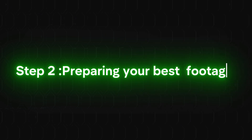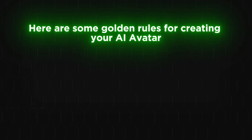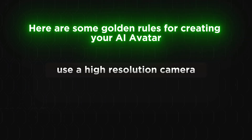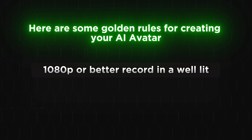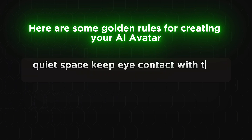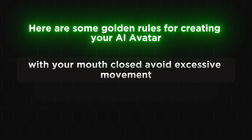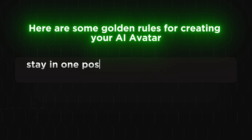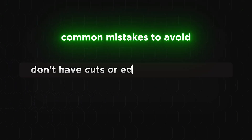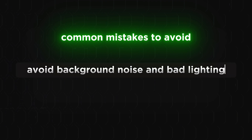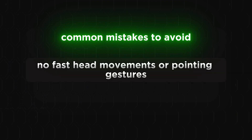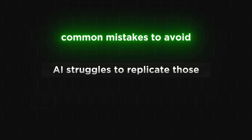Step 2: Preparing your best footage. Before you upload, let's set you up for the best results. Here are some golden rules: use a high-resolution camera, 1080p or better; record in a well-lit, quiet space; keep eye contact with the camera; pause naturally between sentences with your mouth closed; avoid excessive movement — stay in one position and don't wave your hands too much. Common mistakes to avoid: no cuts or edits in your footage, avoid background noise and bad lighting, no fast head movements or pointing gestures — AI struggles to replicate those well.